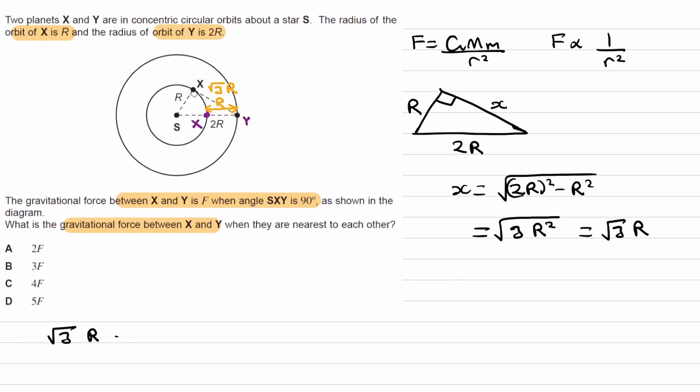We start at root 3R, the new separation is R. To use this proportionality, we need to work out the factor change for R. When looking at our original value of R and our new value of R, when going from here to here, we're multiplying by 1 over root 3.